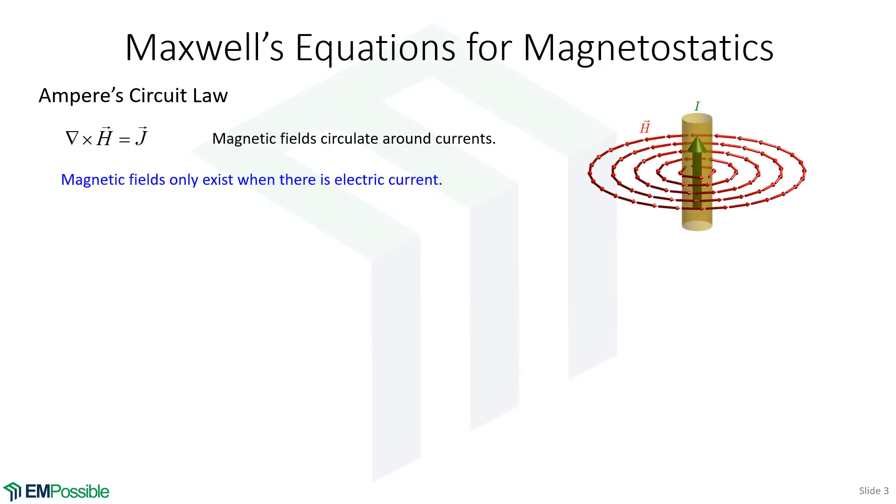Let's review what each of these three equations is saying. So we start with Ampere's circuit law. And if we look at the equation, it's calculating the curl of the magnetic field intensity and saying through the axis of that curl must be a current density.